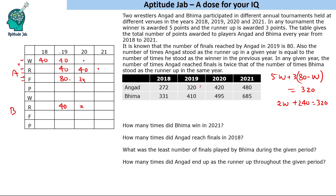In 2018, Angad scored 272 points. Since he had 40 wins, that's 40 × 5 = 200 points from wins. The remaining 72 divided by 3 gives 24 runner-ups. So he reached 64 finals total in 2018, which means by the chain condition, he will be runner-up 32 times in the next relevant year.